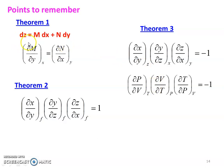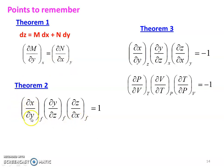Theorem number 1: dz equal to m dx plus n dy. So in the first theorem equation, dou m by dou y at constant x equal to dou n by dou x at constant y. Theorem number 2: we have four variables — dou x by dou y at constant f, multiplied by dou y by dou z at constant f, multiplied by dou z by dou x at constant f, equal to 1.